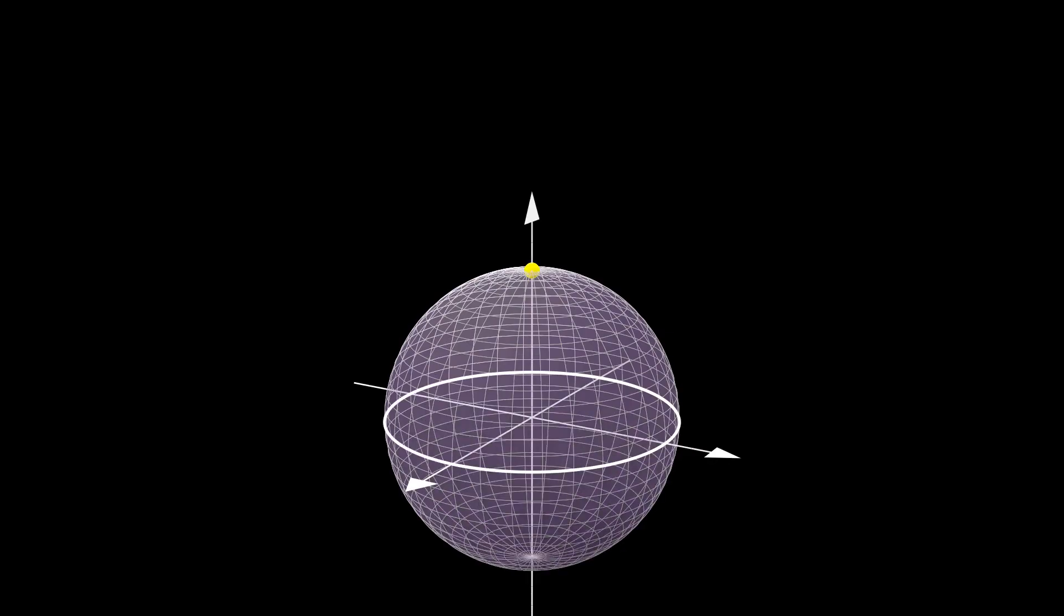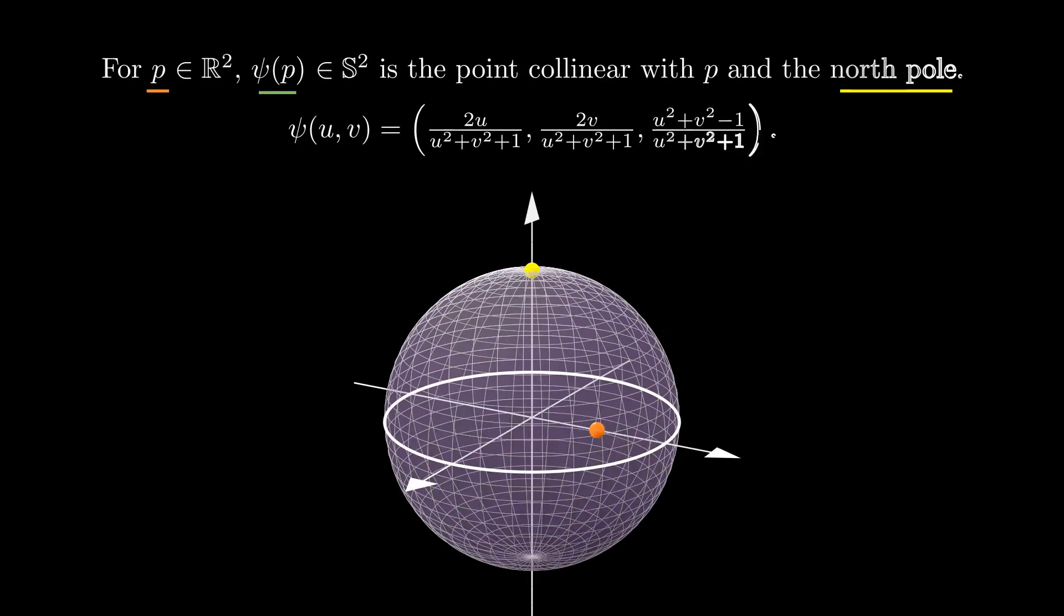If we do the same projection again, but now using the north pole instead of the south pole, we obtain another chart given by the following formula. These two charts together cover the entire sphere.